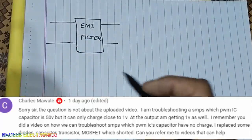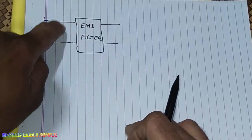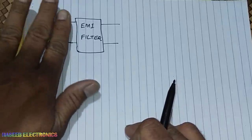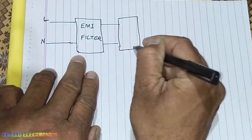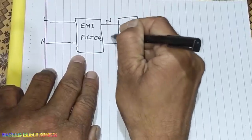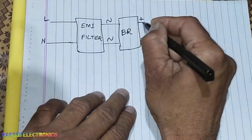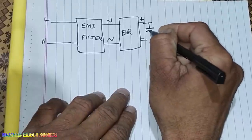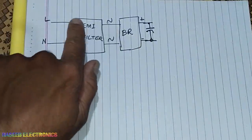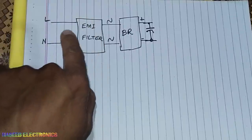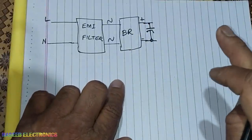Here we have line and neutral. We have a fuse protection circuit — overvoltage, undervoltage, current — all protections are here. Then we have an EMI filter. After that we have a bridge rectifier. Here we have AC voltage, and here we receive positive and negative — that is the DC rail. Here we have a bulk capacitor, that is the DC capacitor. In this portion we have alternating varying current, but at this point we have steady-state current, that is the DC level.